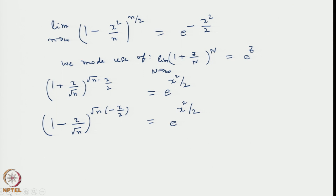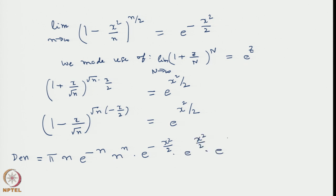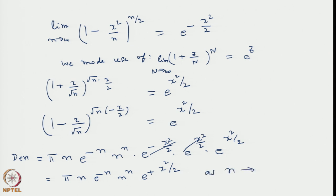When we substitute systematically, we are going to have the denominator as pi n e to the power minus n, n to the power n, and three exponential terms: e to the power minus x squared by 2, e to the power plus x squared by 2, and again e to the power plus x squared by 2. So one of them will cancel, eventually giving rise to pi n e to the power minus n, n to the power n, e to the power plus x squared by 2, as n tends to infinity.